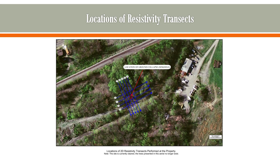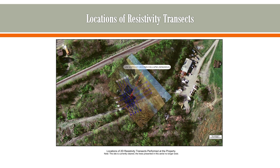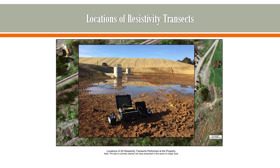These are the locations of the resistivity profiles that were performed — four in the east-west direction and five in the north-south direction. The red circle in the center marks the location of the open collapse feature. This is a photograph of one of the resistivity lines set up in the retention basin.